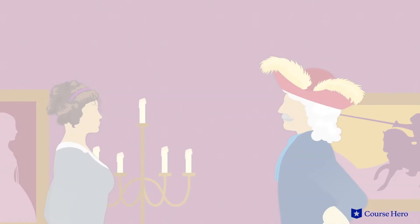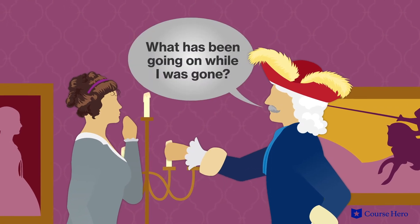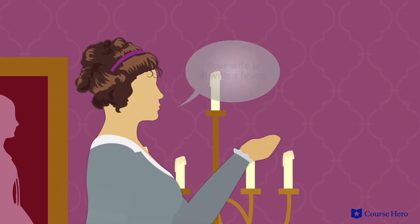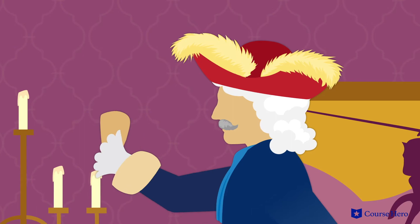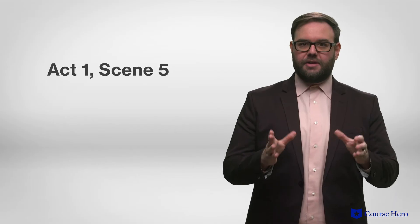In Act 1, Scene 4, Orgogne arrives. Cléant asks about his brother-in-law's visit to the country, but Orgogne snubs Cléant and asks Doreen about what's been going on in his absence. She tells him his wife was ill with a fever, but he interrupts to ask after Tartuffe.